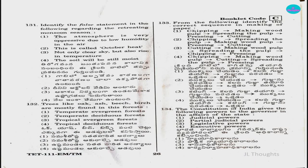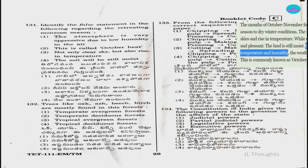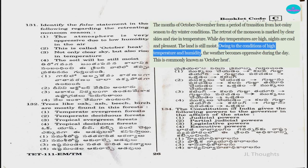Question number 131: Identify the false statement regarding the retreating monsoon season. Option 1 states: the atmosphere is very oppressive due to low humidity in the air — this is called October heat. However, according to the textbook definition of October heat, both temperature and humidity are high during this period. Since option 1 says low humidity, which is incorrect, option one is the false statement.